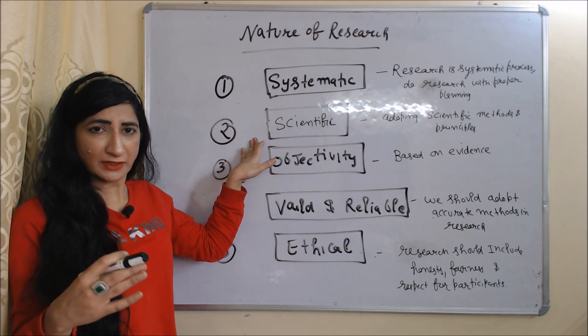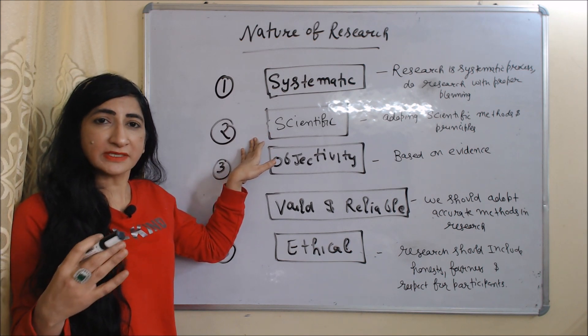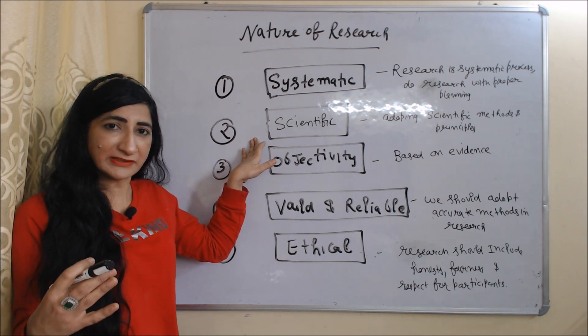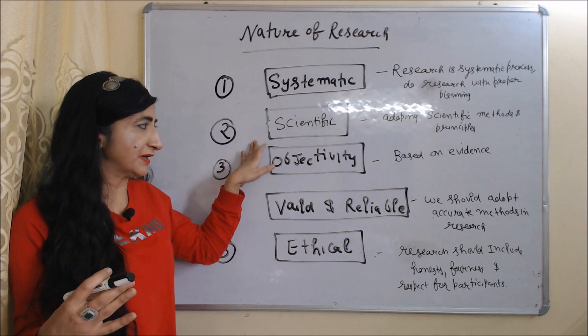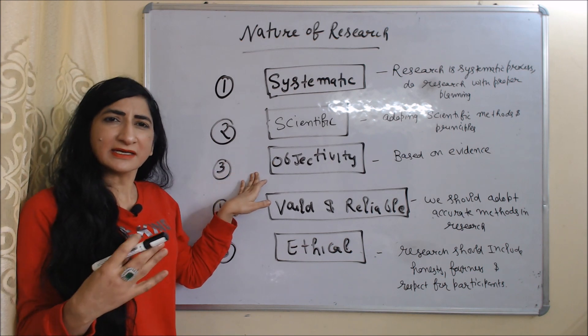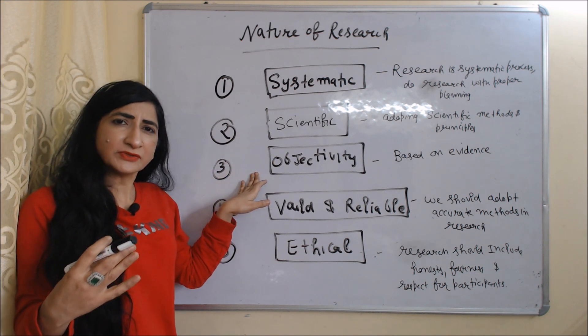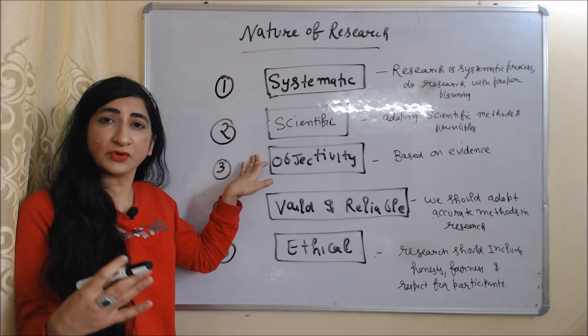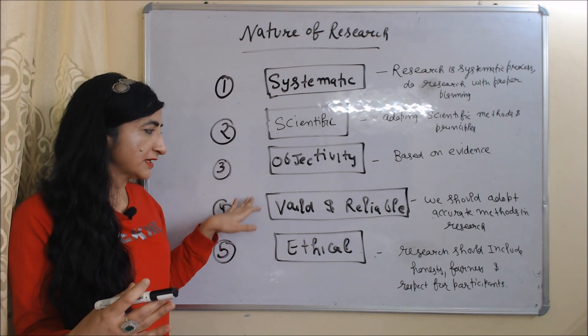Second is scientific. We do research by adopting scientific methods and principles. Third is objectivity. Research is not based on our opinions and feelings.